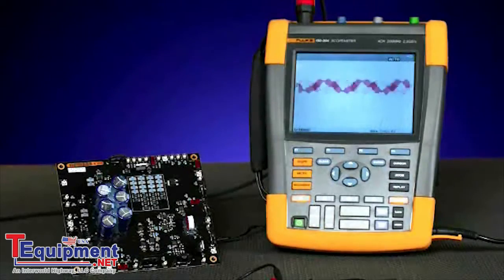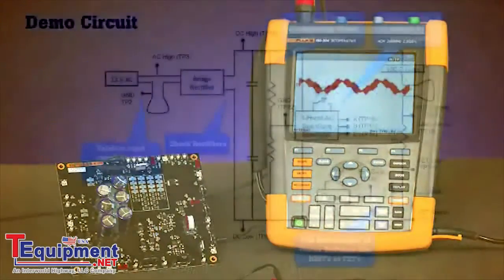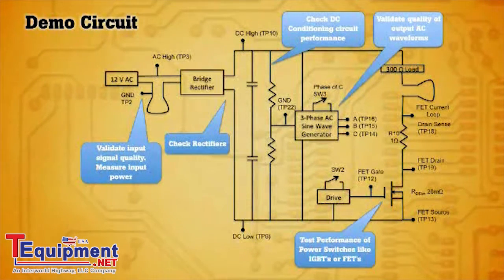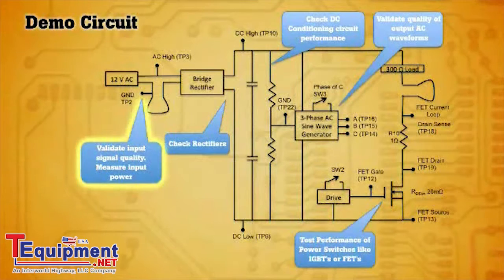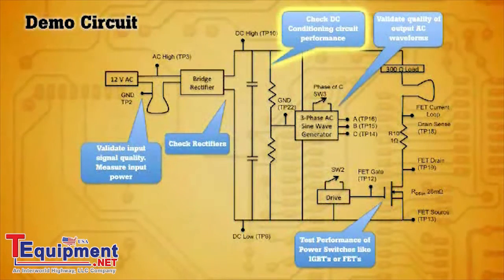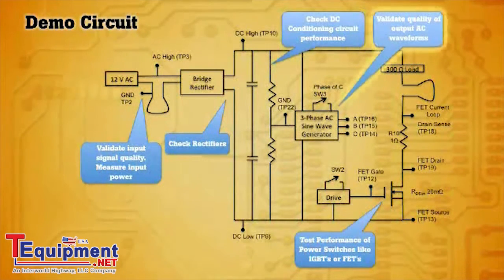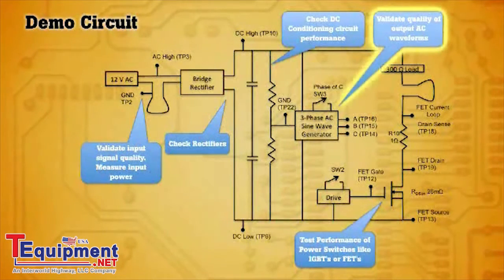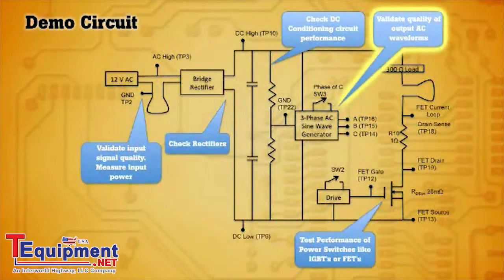The demo board we're using today is a basic inverter circuit that you might find in industrial power electronic systems. It starts with the input circuit. The AC goes through a bridge rectifier, creating a DC bus that will then be used in the inverter circuit. Switches or high-powered switches modulate this DC bus to provide an AC waveform on the output of the board.